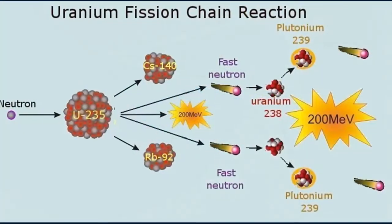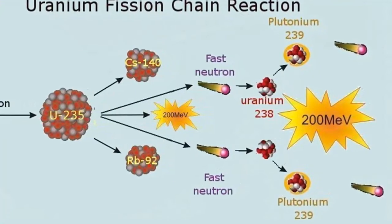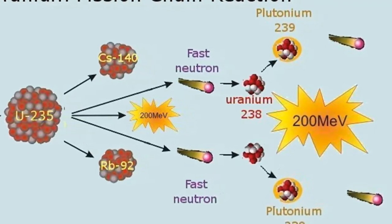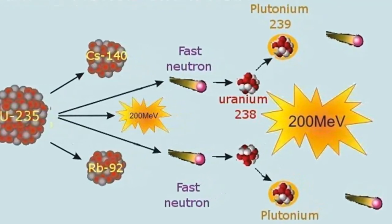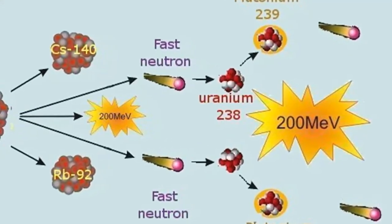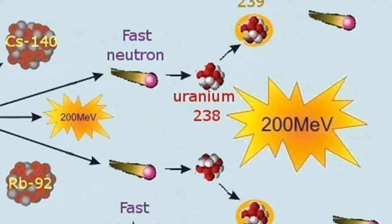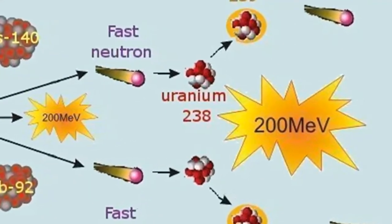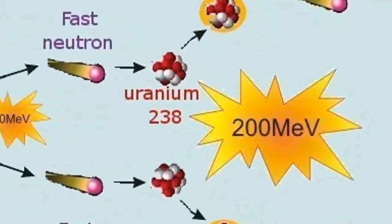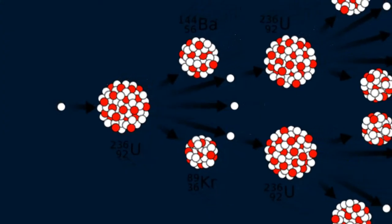Fission is accomplished by bombarding the nuclei of heavy atoms, commonly Uranium-235, with neutrons. This causes the Uranium nuclei to split into smaller nuclei and to emit neutrons and heat energy. The ejected neutrons in turn bombard the nuclei of adjacent Uranium atoms, producing a chain reaction.